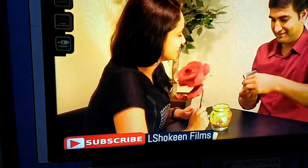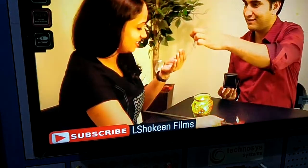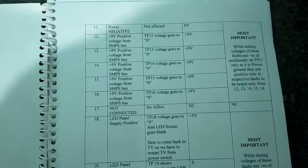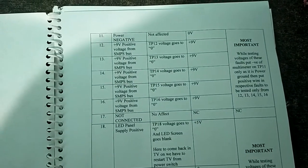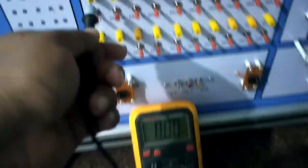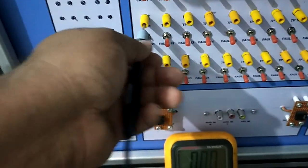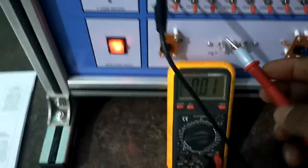Now we will go for faults for power and other things. So just check how we check these voltages. Now for pin number 12 to 16, we have to put the negative of multimeter to the TP11. OK, we have to put the negative of multimeter to TP11 here.